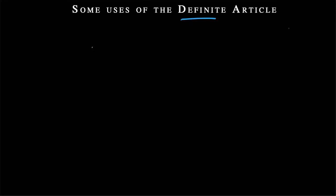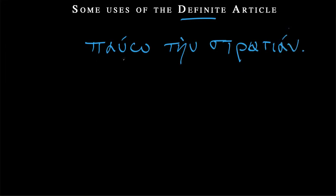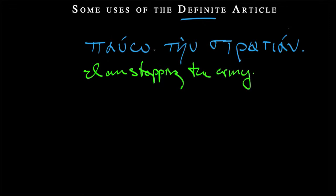So let's create a quick sentence. Pauo tein stratian. I am stopping the army. So this is fine. That's a great English translation. I am stopping the army. So the verb contains the subject. This personal ending says I, and we don't need a Greek pronoun to say I. I am stopping the army.